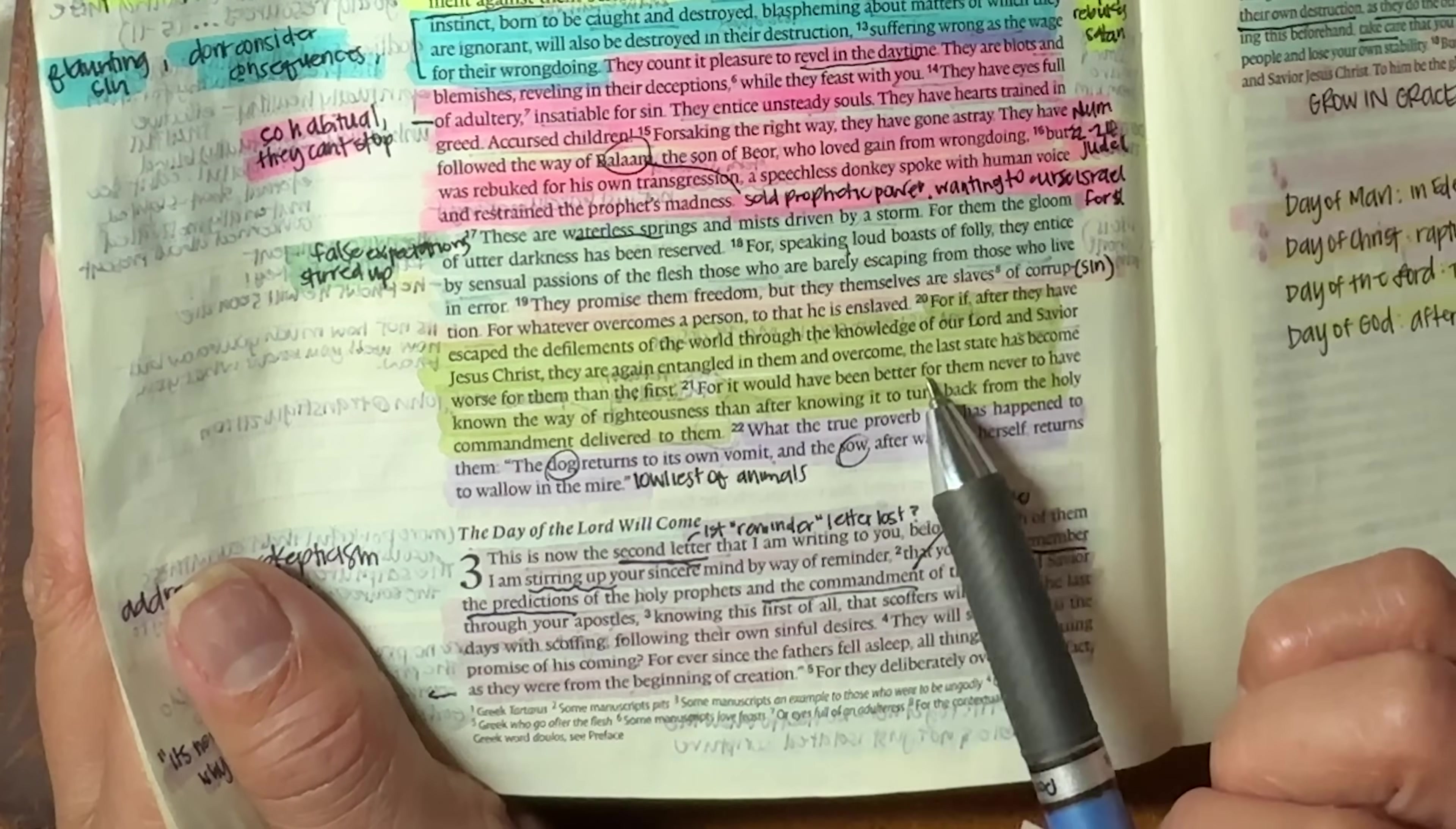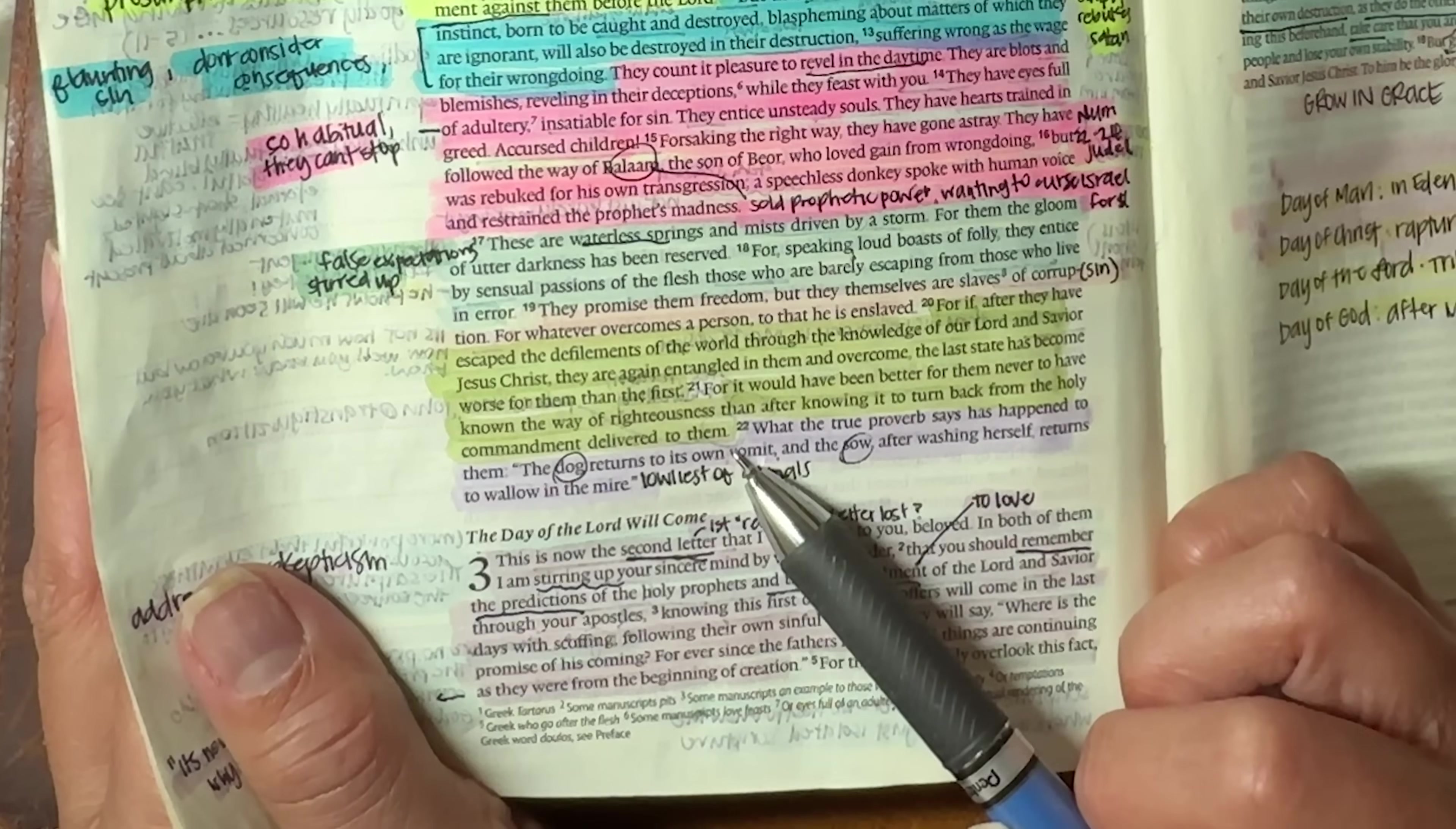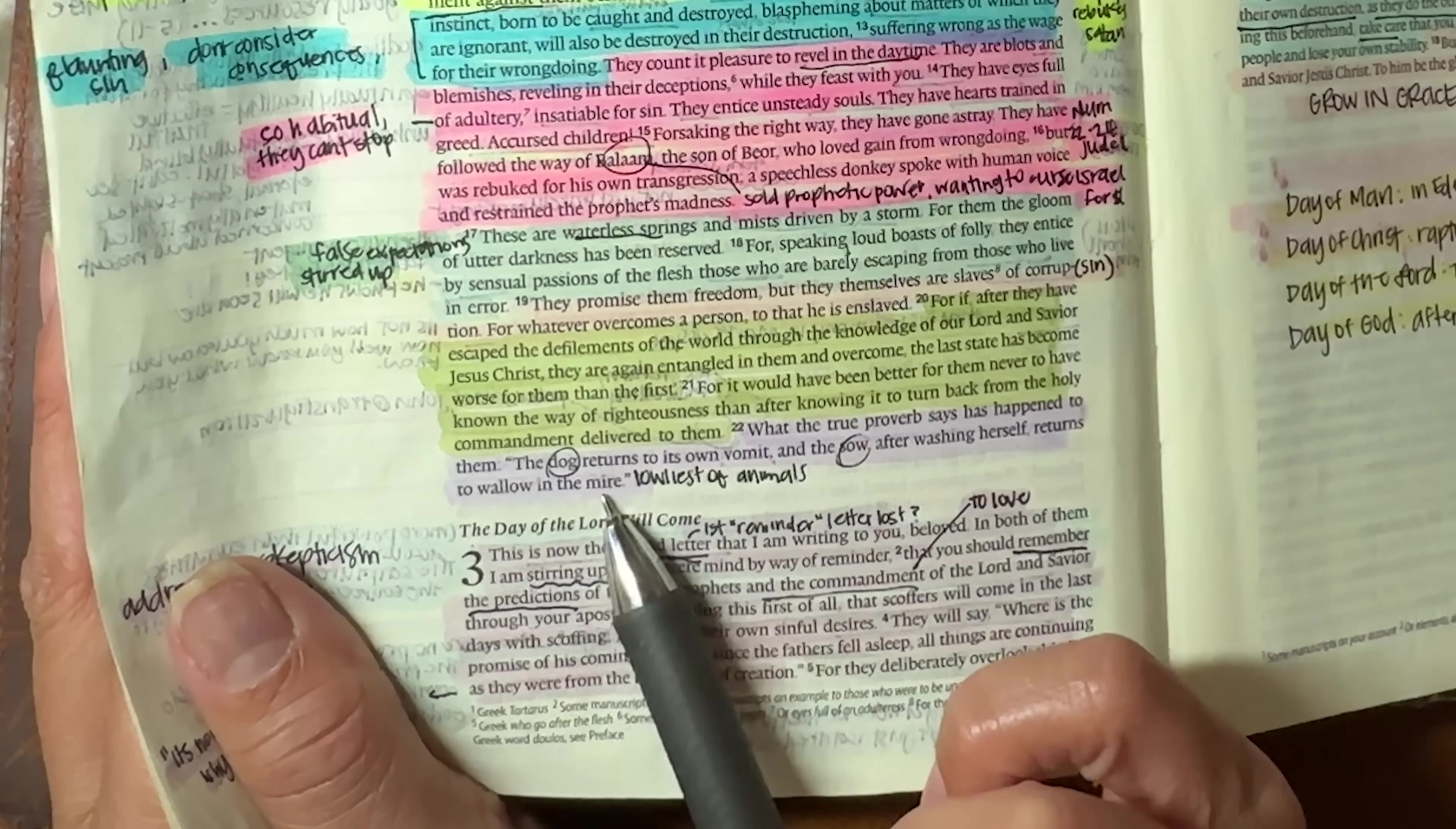For it would have been better for them never to have known the way of righteousness than after knowing it to turn back from the holy commandment delivered to them. So basically they would have been better off having never even heard of Jesus or the gospel or anything like that, because now they're going to be worse off now that they will be held accountable for the fact that they knew the truth and they blatantly disobeyed it. What the true proverb says has happened to them. The dog returns to its own vomit and the sow, after washing herself, returns to wallow in the mire.